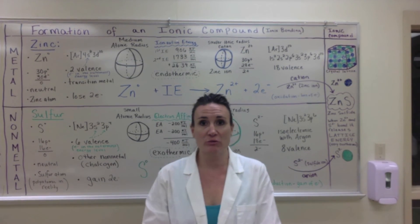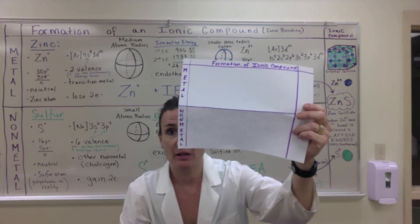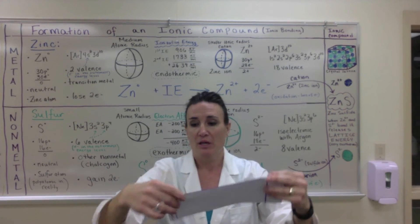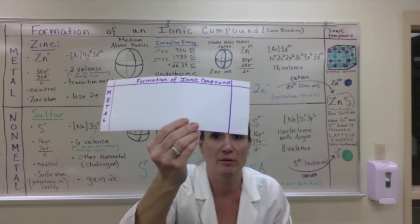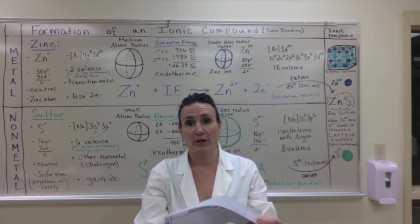That leads us to another foldable we're going to make. It's just a simple hot dog fold with metal on the top and non-metal on the bottom, and you'll go through describing what the metal and the non-metal have to do to form an ionic bond.